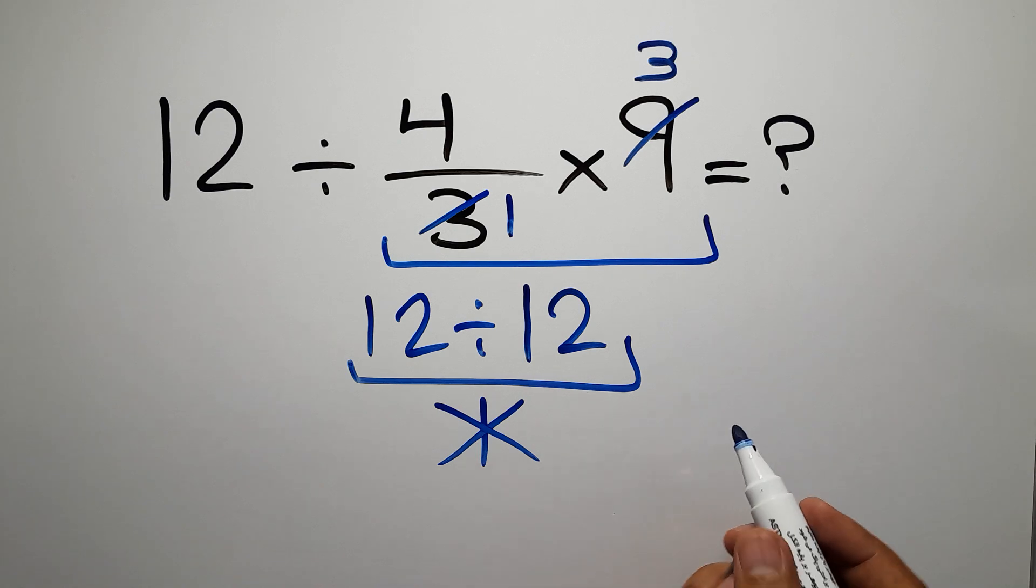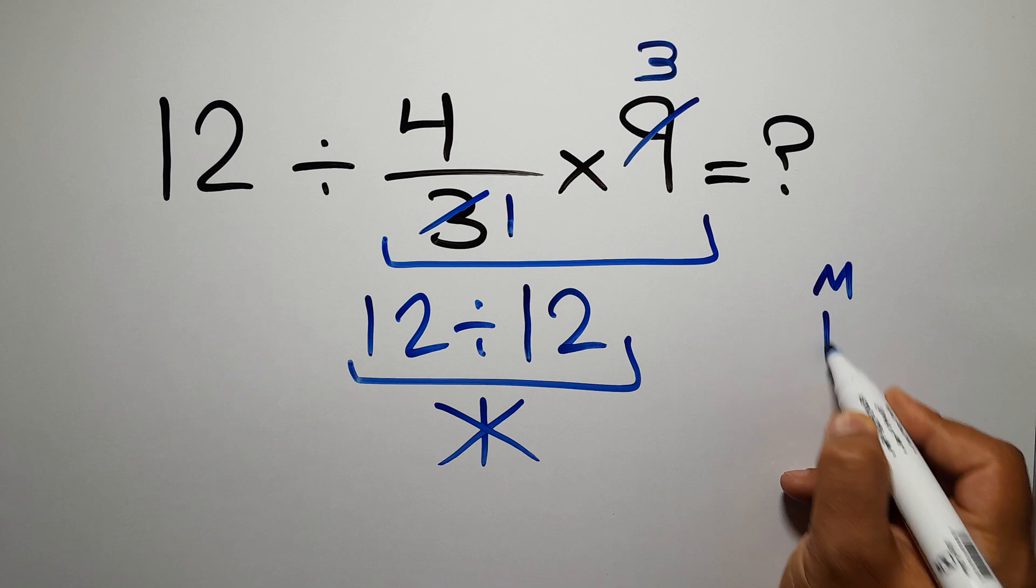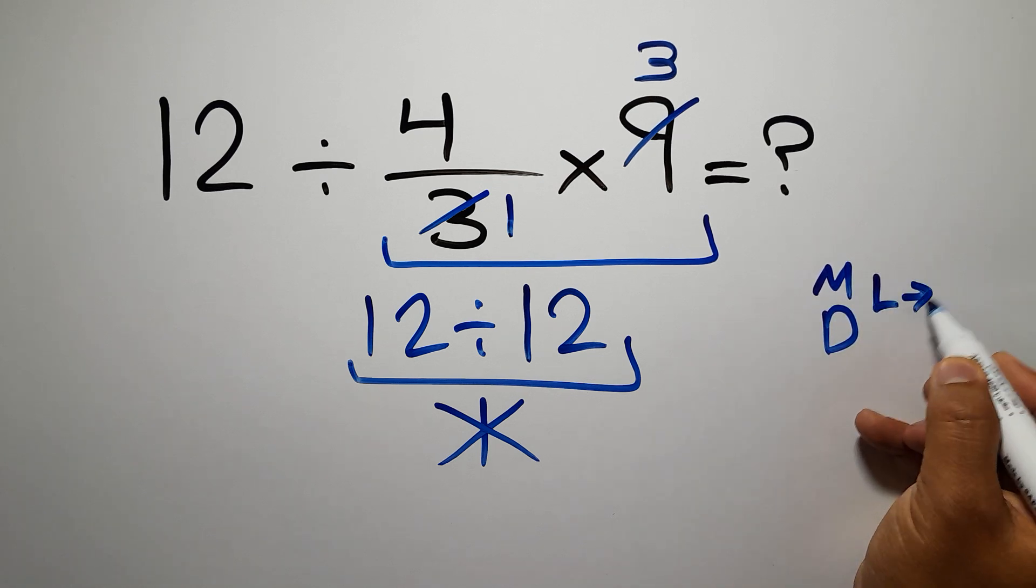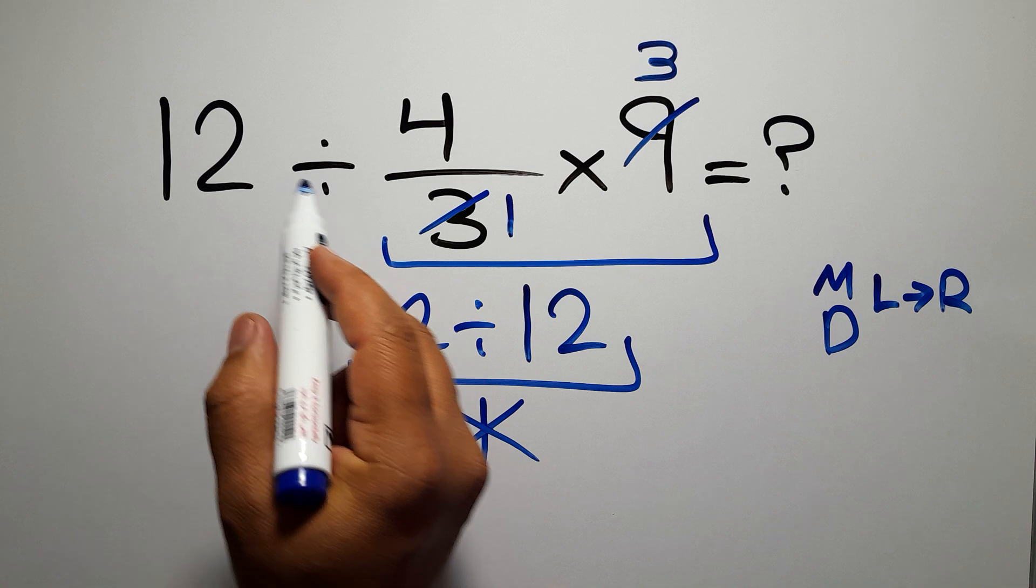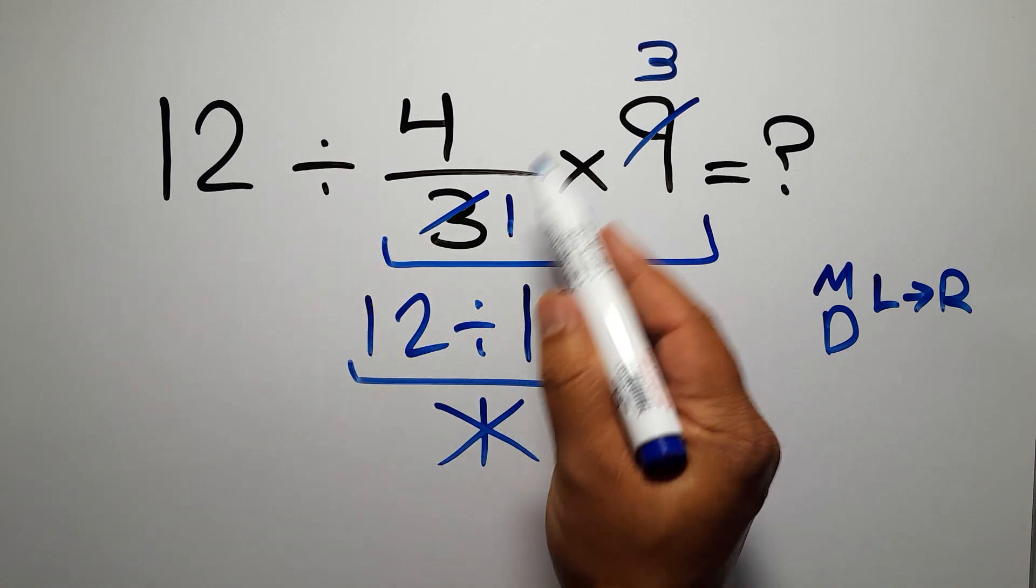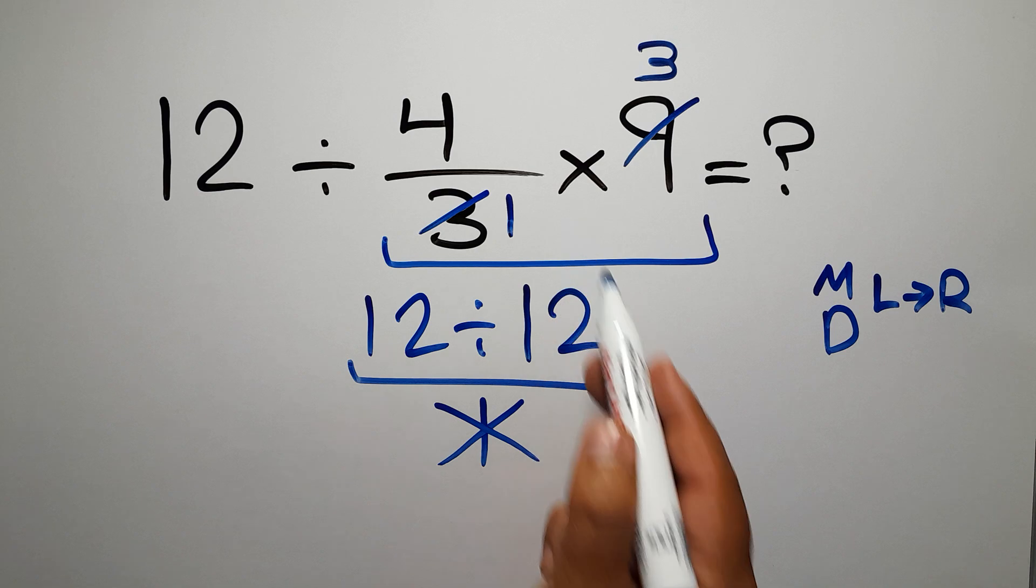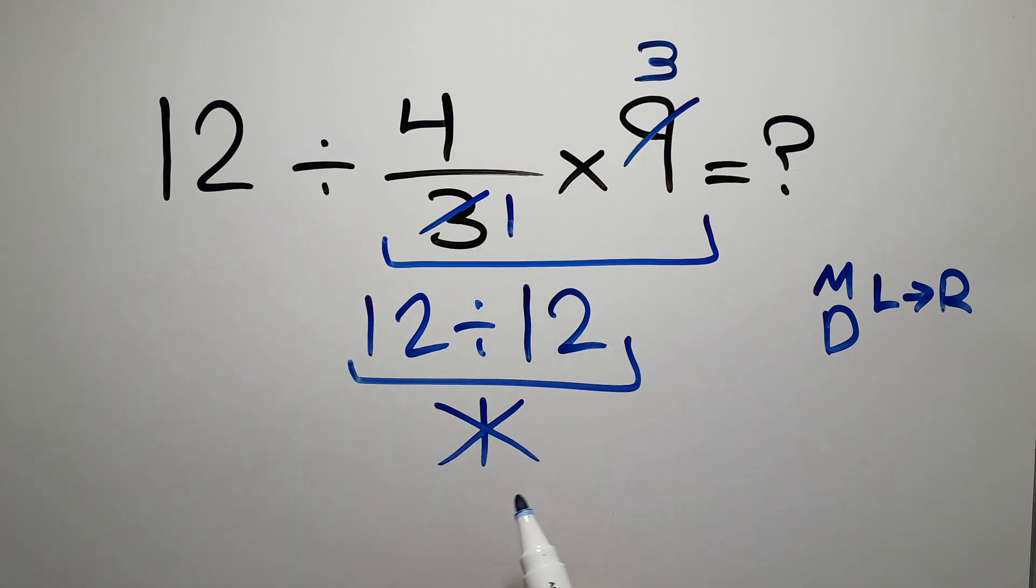According to the order of operations, multiplication and division have equal priority and we have to work from left to right. So here, first we have to do this division, not this multiplication. If you do this multiplication before this division, it is wrong.